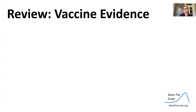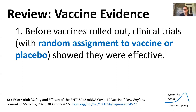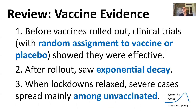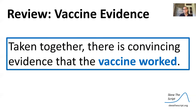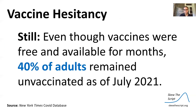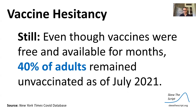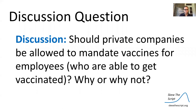Let's review all of our vaccine evidence. Before vaccines rolled out, clinical trials assigned random individuals to vaccine versus placebo and showed the vaccine was effective. After the rollout, we saw exponential decay in COVID-19 cases. When lockdowns relaxed, severe cases spread mainly among unvaccinated individuals. Taken together, there is convincing evidence that the vaccine worked. Even so, 40% of adults remained unvaccinated as of July 2021. Today's discussion question: should private companies be allowed to mandate vaccines for employees who are able to get vaccinated, and why or why not?